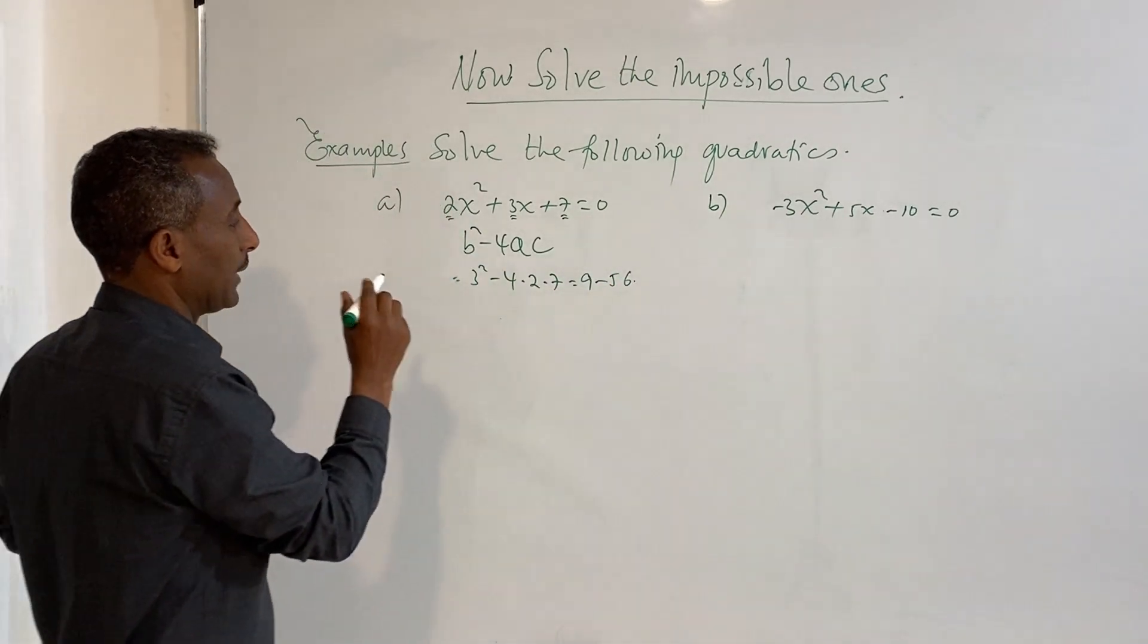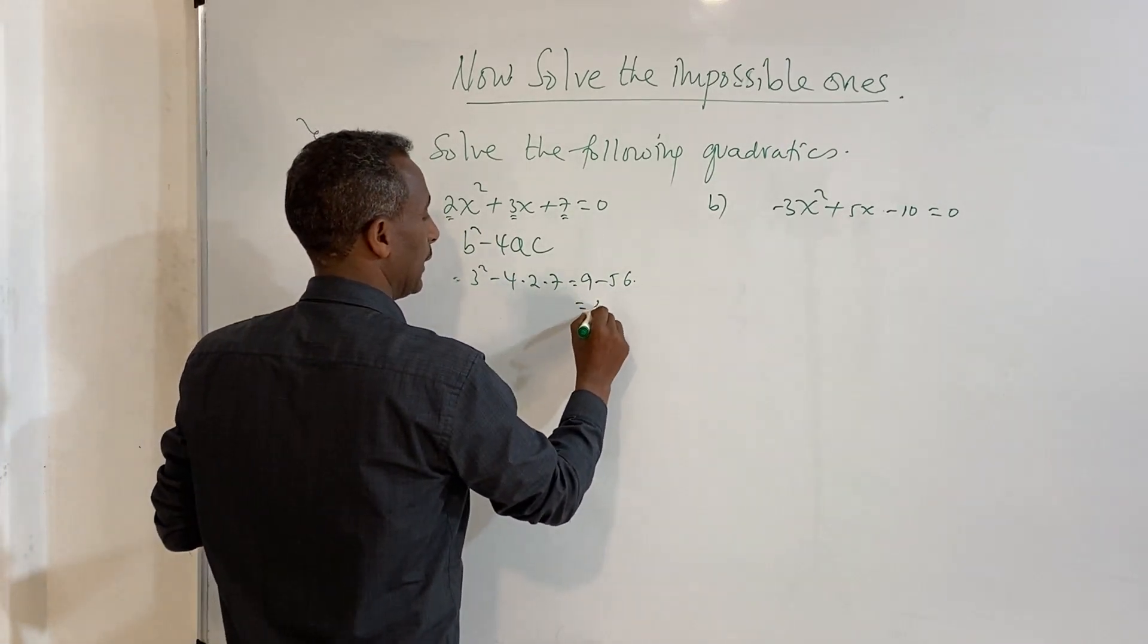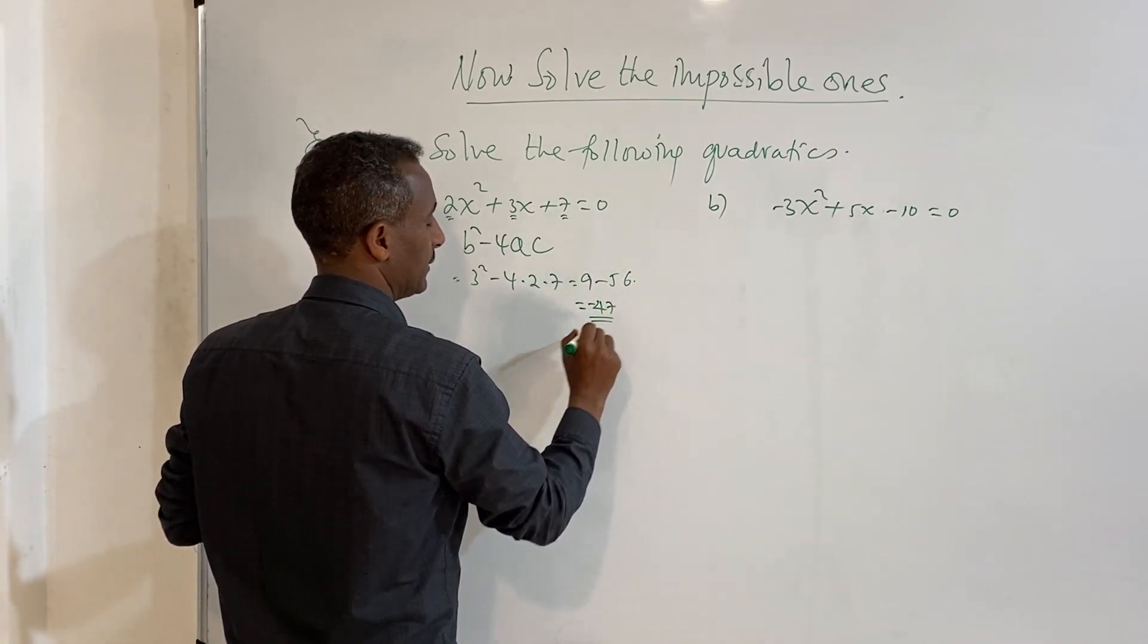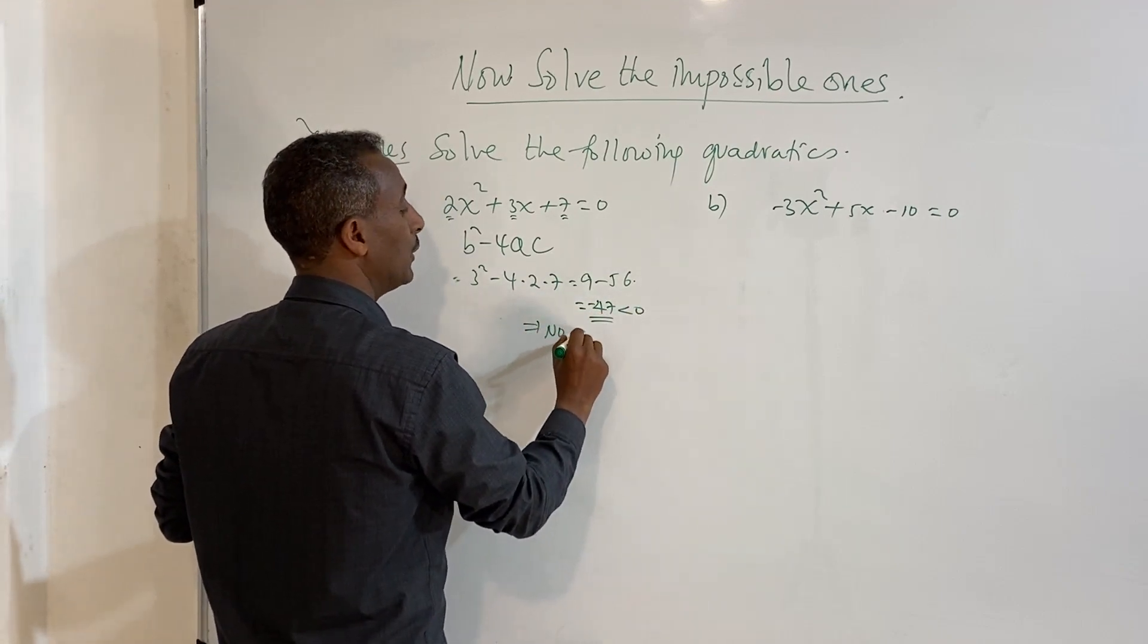So here, 9 minus 56 is what? 47 minus. This is less than zero. Therefore, no solution.